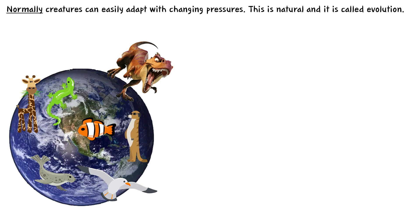When we look at our planet, we know there are so many different organisms. There's such a huge array of organisms, and in the past there were organisms that don't even exist today like the dinosaur. And in the future there will be organisms that don't exist today, new species that may develop. So normally all of these creatures can easily adapt with changing pressures. What do I mean by changing pressures? For example, weather changes, climate changes, things like that, natural things. So normally these creatures can easily adapt to these changing pressures by changing over time. This is natural and we call it evolution.